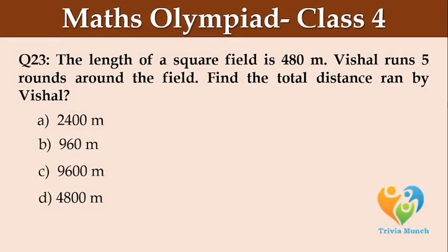The length of a square field is 480 metres. Vishal runs 5 rounds around the field. Find the total distance ran by Vishal.